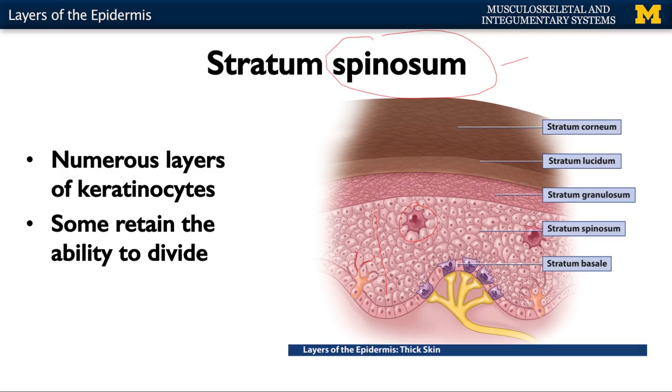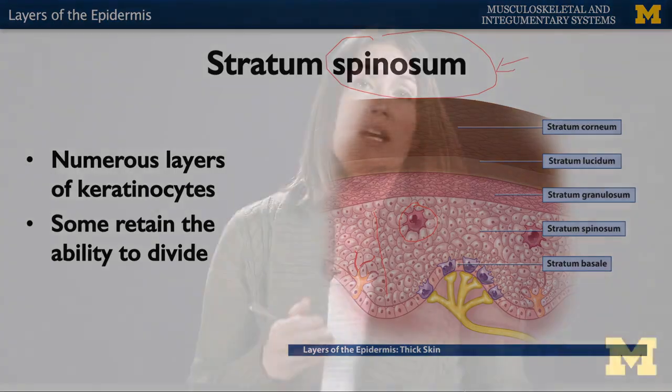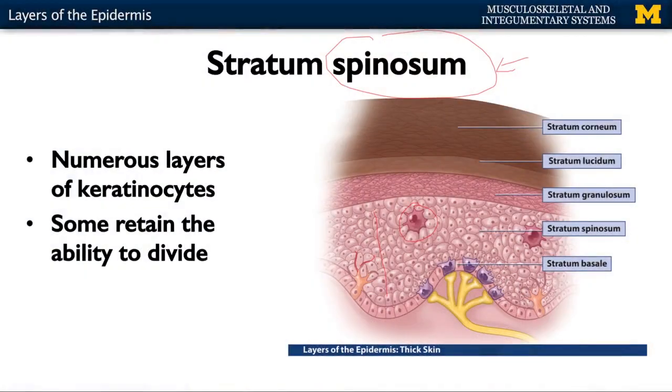The name 'spinosum' seems confusing and it's all because of histology. When creating slides, these cells would dry up and appear spiny. But in a living individual, these cells are actually quite robust and quite large in comparison to the other layers.